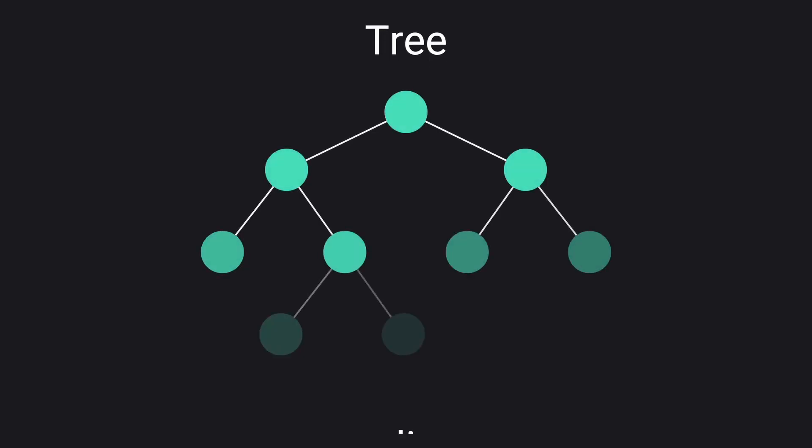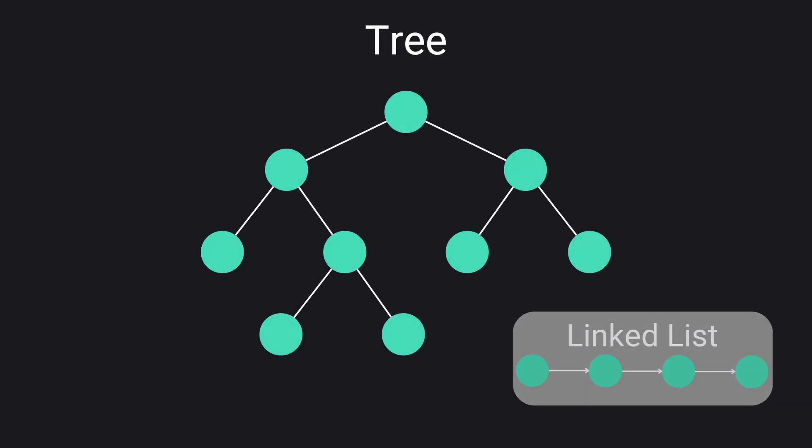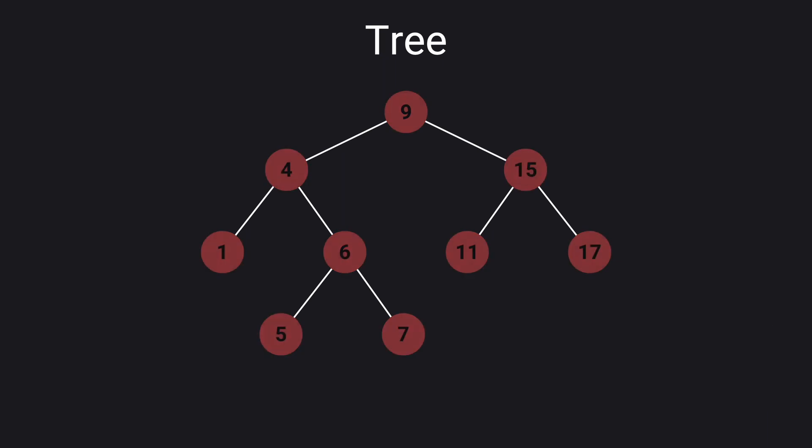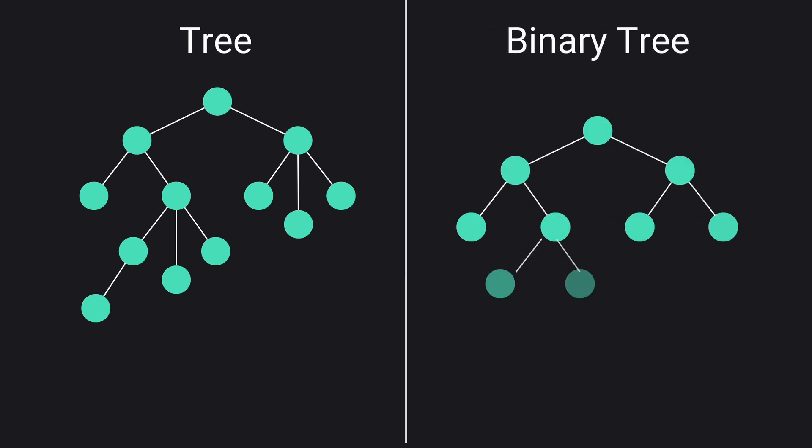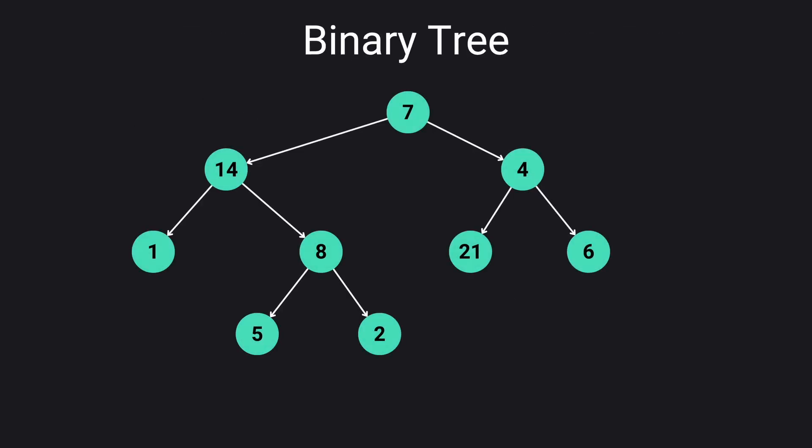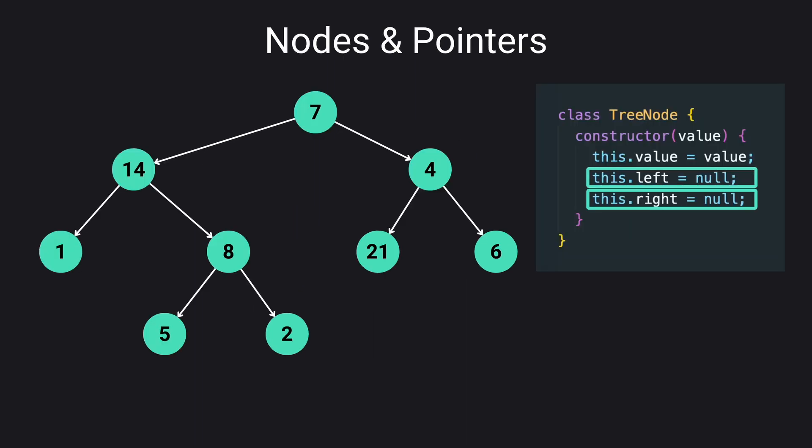A tree is a non-linear data structure compared to linked lists that consists of nodes connected by edges. However, in coding challenges and interviews you are more likely to encounter problems involving binary trees rather than general trees because of their simplicity. In a binary tree each node contains a value and pointers to two children, left and right, which refer to their left and right child nodes.